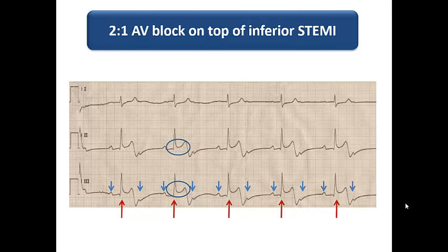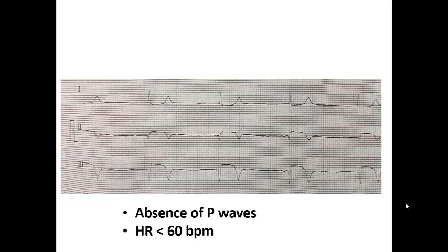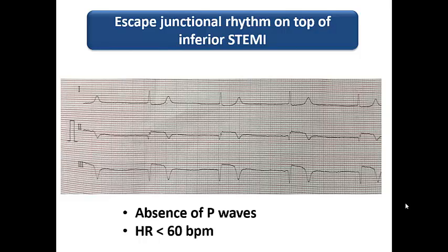A 2:1 AV block can also occur with inferior STEMI — a P wave just after the T wave that is not conducted through the AV node. A 2:1 AV block may be Mobitz type 1 or Mobitz type 2, as discussed in the AV blocks lecture. In another ECG, bradycardia with absence of P waves and a heart rate less than 60 beats per minute represents escape junctional rhythm — the SA node has stopped pacing, and a junctional escape rhythm has taken over.